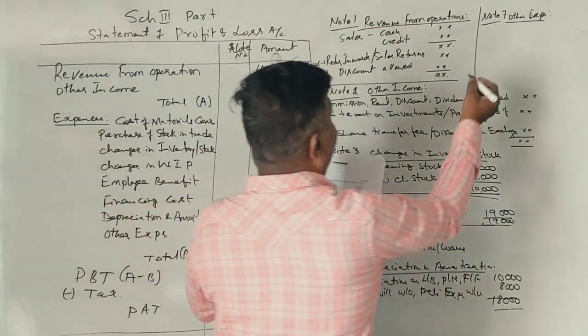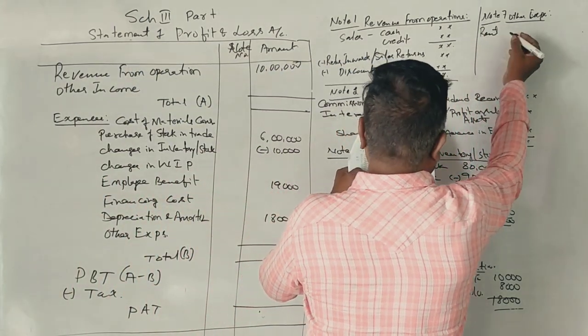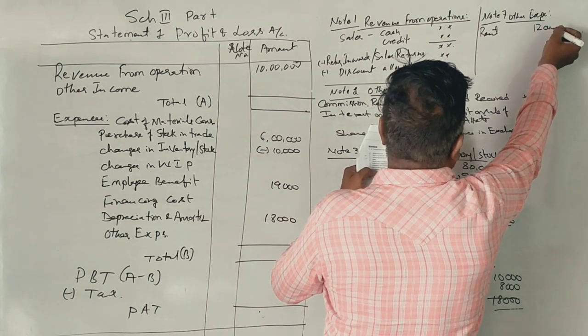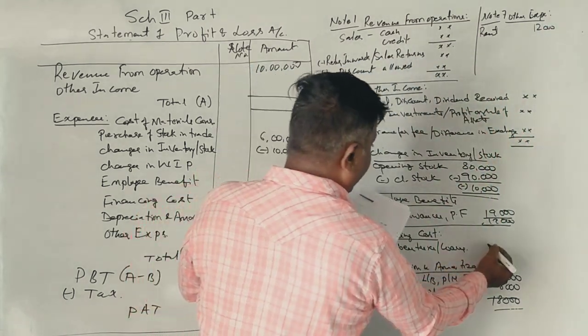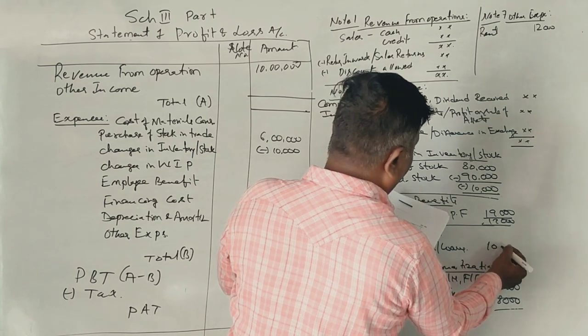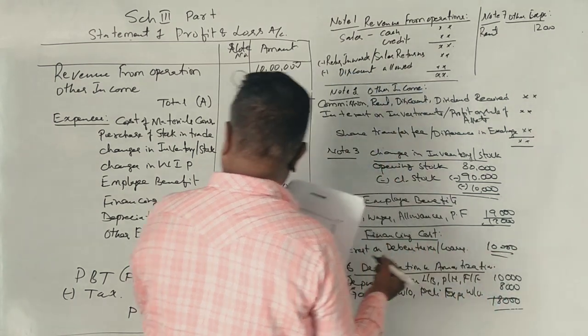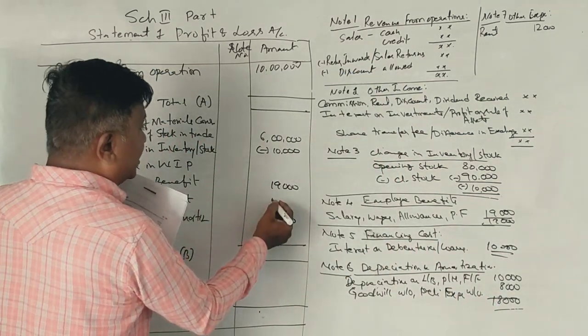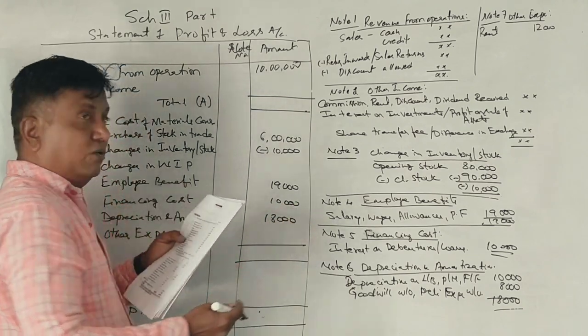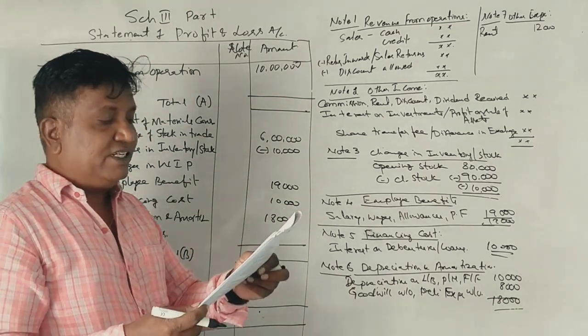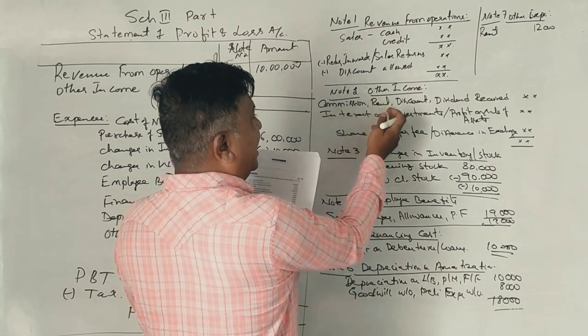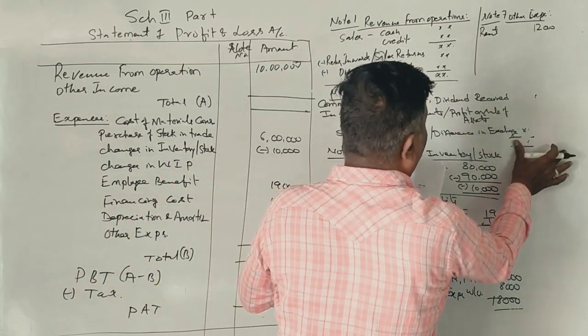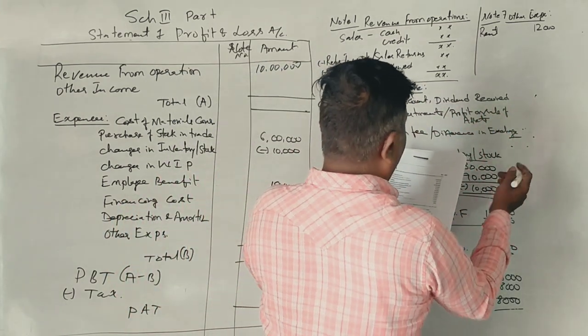Now, rent of showroom goes under other expenses, 12,000. Next, interest on loan, 10,000. This is the financing cost.